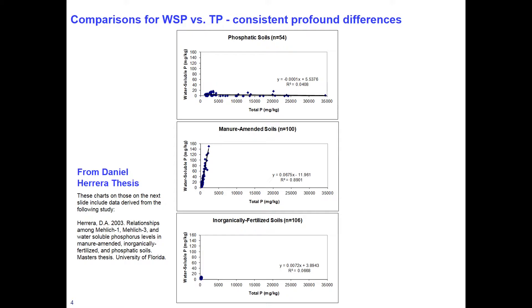If you take a look at these three plots, you can see that the form of phosphorus markedly makes a difference in the potential for elevated phosphorus in solution.